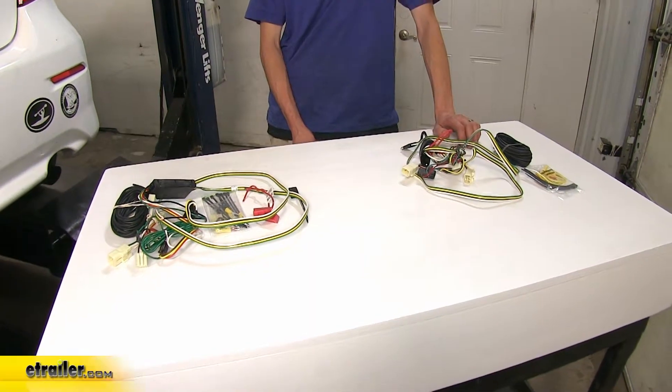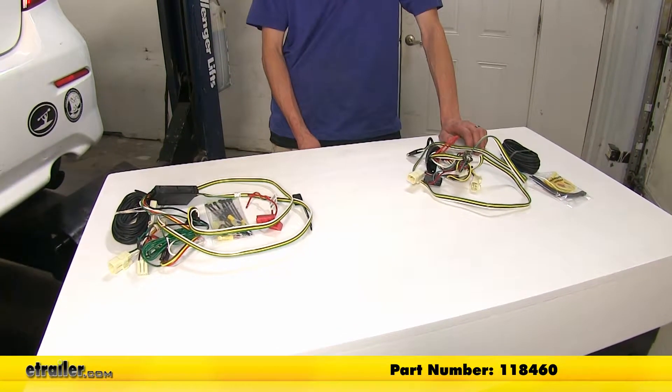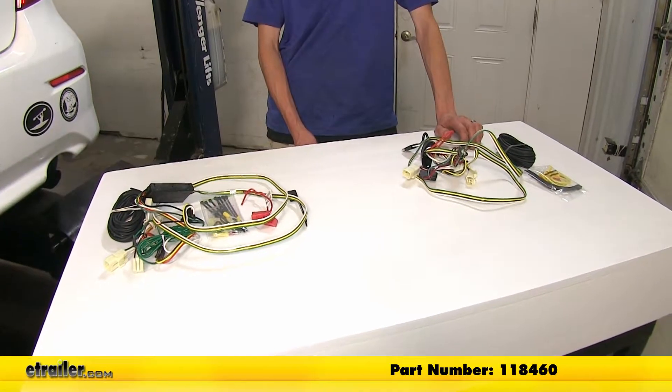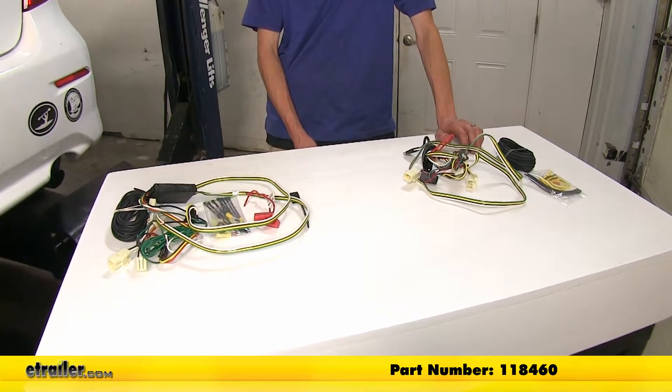Our first option here off to the right is the Tekonsha T1 vehicle wiring harness with a four pole flat trailer connector, part number 118460.